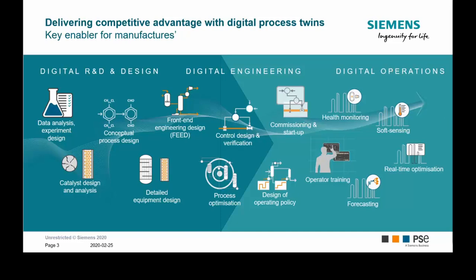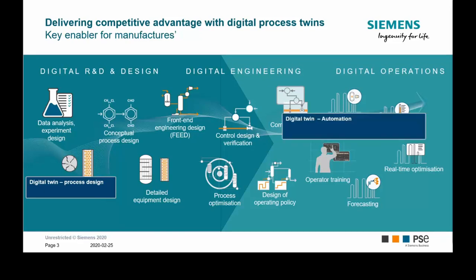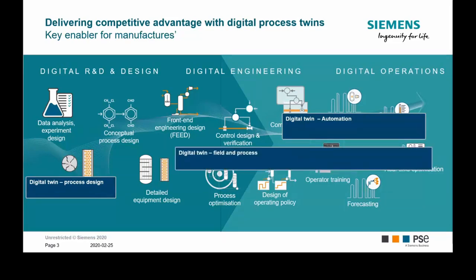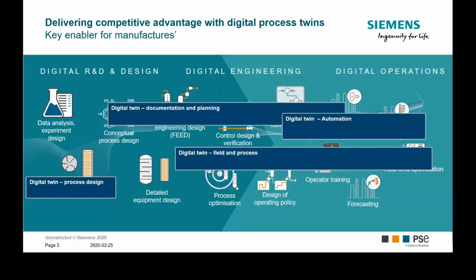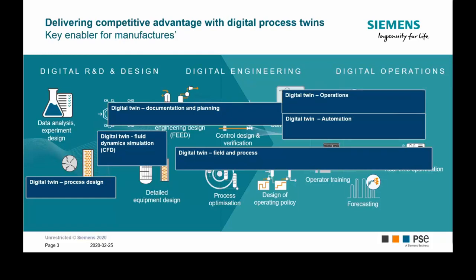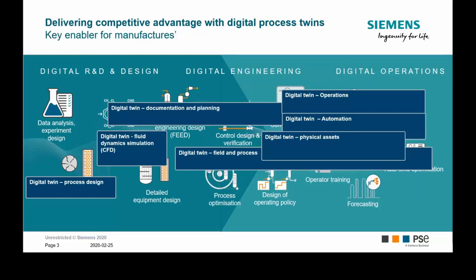In the digital operations phase, product performance, quality, and maintenance come into play. Typically there are many digital twins emerging across the plant life cycle. You start with the process design twin, then you have the digital automation twin, a digital twin for field and process, a digital twin for documentation and planning, a fluid dynamic simulation twin, a digital twin for operations, and a digital twin for the physical assets.